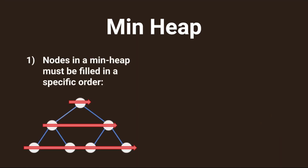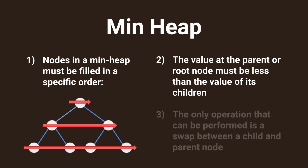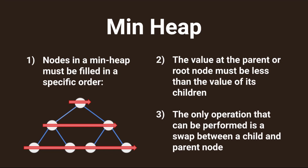There are a few rules that we need to follow. The first is that nodes will be inserted at the lowest level of the tree, from left to right. The second rule is that in a min heap, the parent node must be less than the value of its children before proceeding. This brings us to rule 3, which is that a swap operation can be performed between a child and parent node until rule 2 is satisfied.